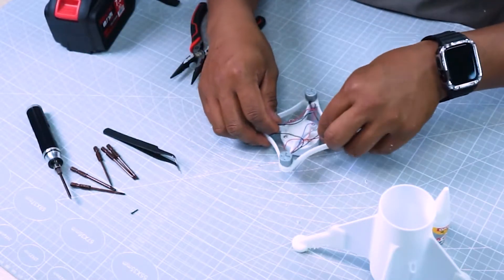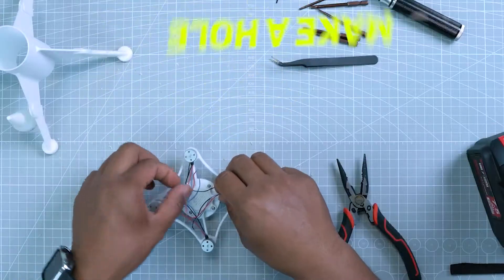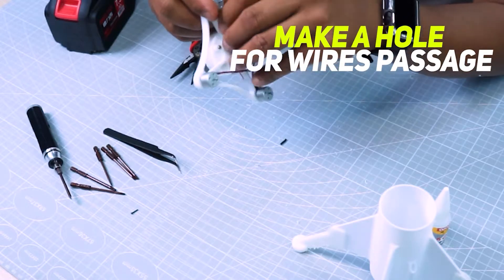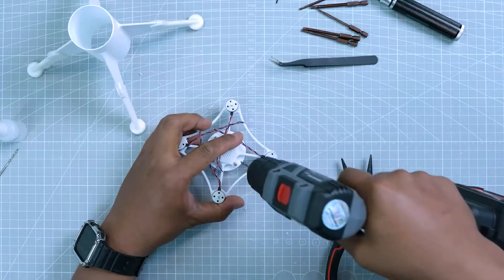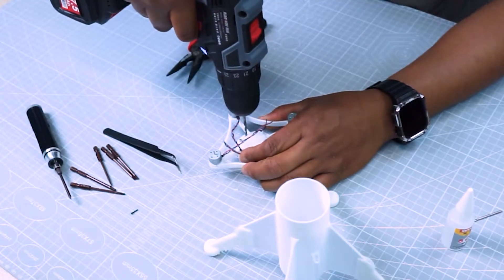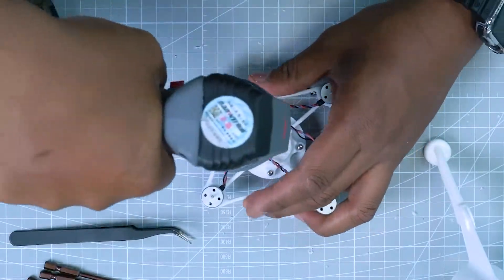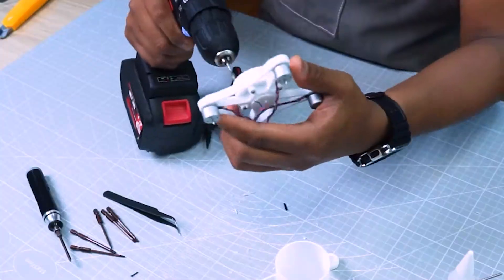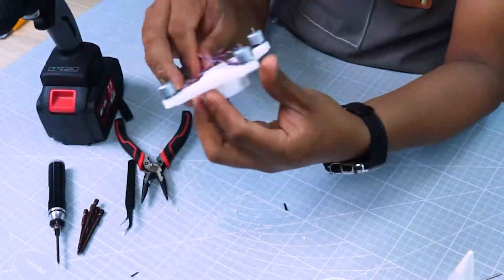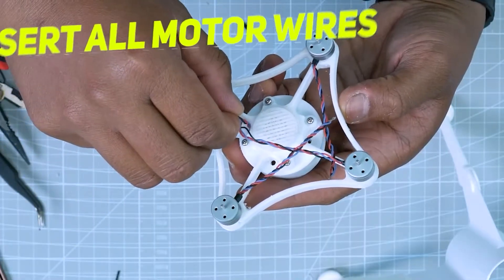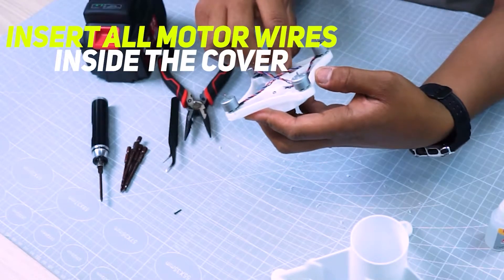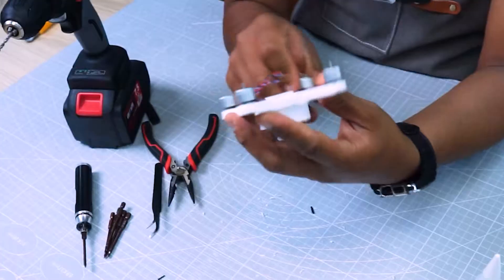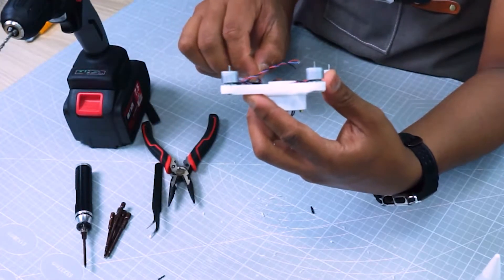After attaching all the motors to the frame, make four holes on the bottom cover so that we can have enough space to insert our motor wires going inside the rocket. Use 3mm drill bit in making holes. Pinch the wires and roll it in one direction so that we can insert it easily. Do this process for the remaining motors.